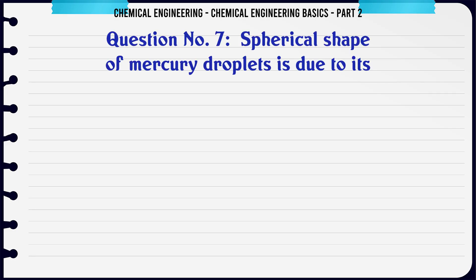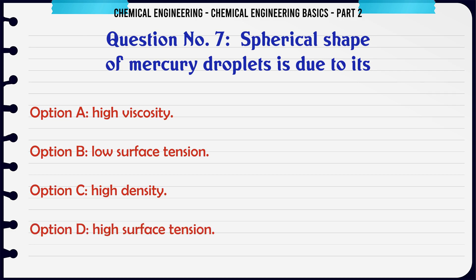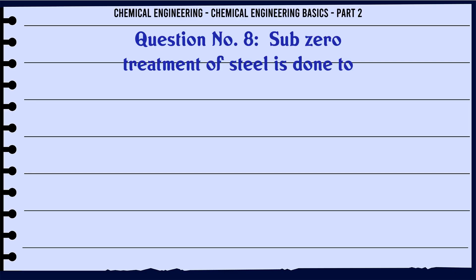Spherical shape of mercury droplets is due to its: a) high viscosity, b) low surface tension, c) high density, d) high surface tension. The correct answer is: high surface tension.